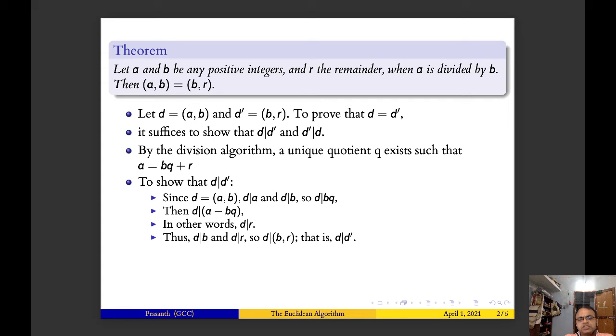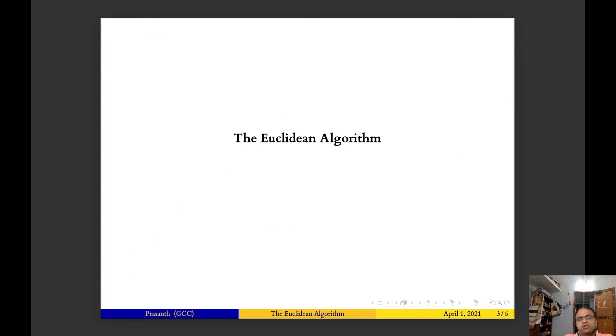Therefore d divides b and d divides r, so d divides the gcd of b,r. That is, d divides d'. Similarly we can show that d' divides d, so d' is equal to d. Therefore the gcd of a,b is same as gcd of b,r. Next we will study the Euclidean algorithm.